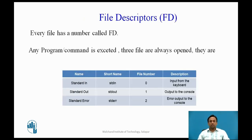Next, we will see the file descriptors, that is fd. In Linux, every file has a number called fd. If you execute any command or program in Linux, there are three files that are always open: standard in, standard out, and standard error. The file numbers are: 0 for standard in, 1 for standard output, and 2 for standard error.